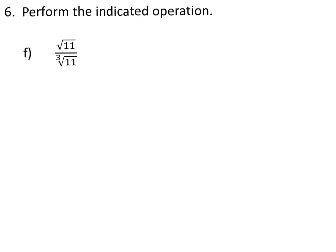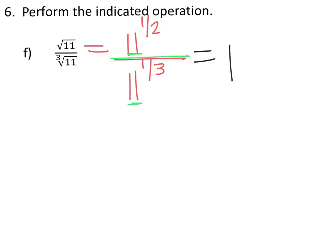As the problem is written now we cannot divide anything, but we can convert these radical expressions into rational exponents, and then we'll have the same base and can simplify. The numerator we can change to 11 raised to the 1/2, and the denominator we can change to 11 raised to the 1/3. Now that we have the same base and we're dividing, we can keep the base and subtract the exponents: 11 raised to 1/2 minus 1/3.